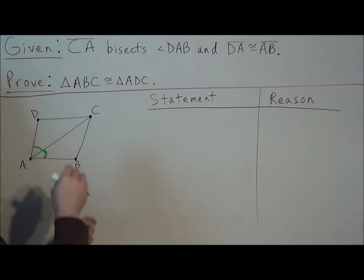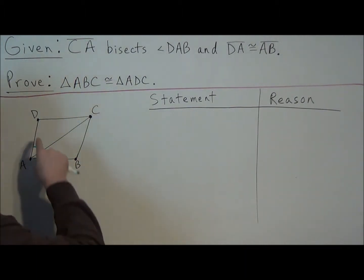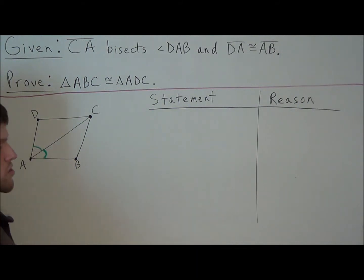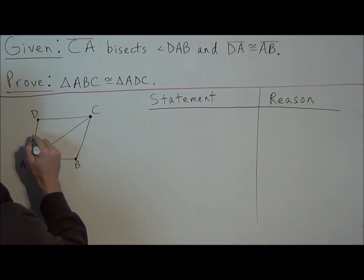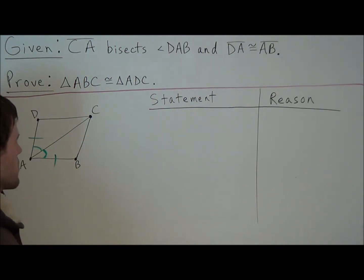Once again, because angle DAB is being bisected, that means these two angles are going to be the same. So we mark off angle DAC and angle BAC with these arcs to show that they're the same. Next, we're told that DA is congruent to AB. So we can make a tick mark here to show that these two line segments are the same.